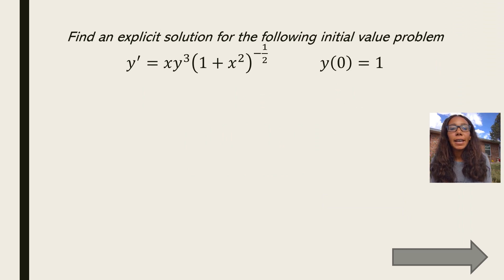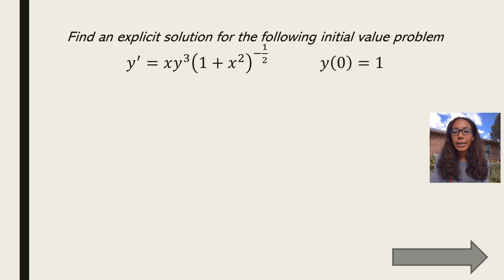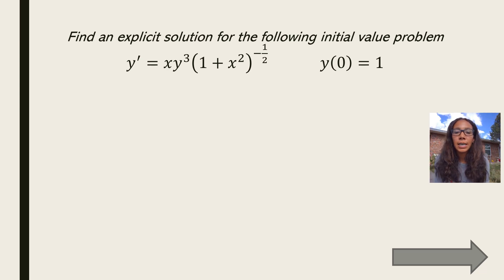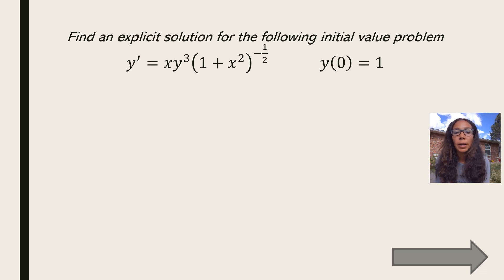We're asked to find an explicit solution for the following initial value problem: y prime is equal to x times y cubed times the quantity 1 plus x squared to the negative one-half, with y of 0 equal to 1.